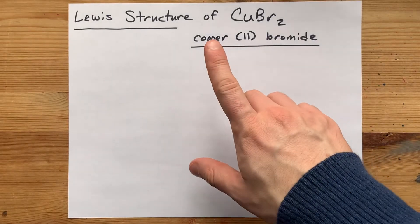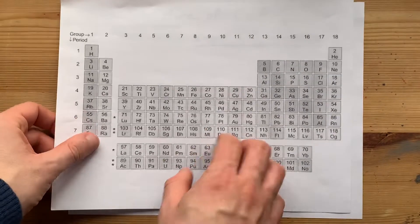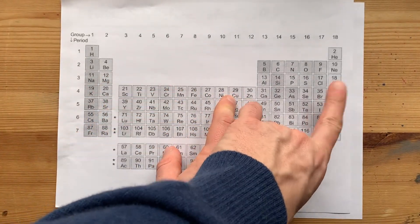The Lewis structure for copper(II) bromide, or CuBr₂, has copper, a metal, bonding with bromine, a non-metal.